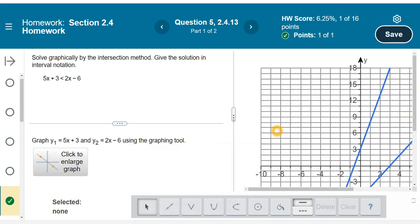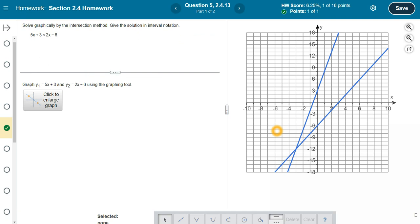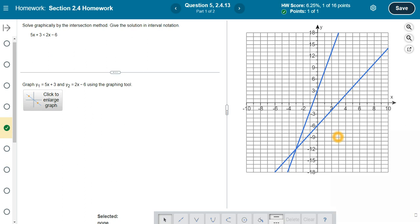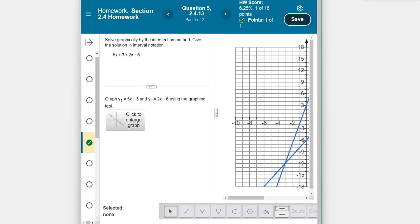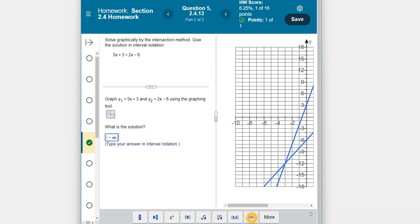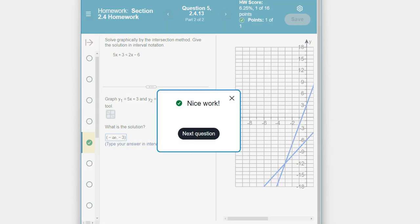Let me shrink it back down. You have to save the graph and then check answer first. And then it'll pop up and tell you to put in the solution. And then that's where I would put in parentheses, negative, here's your infinity symbol right there, comma, negative 3. There was no equal to, so use a parenthesis. And then check my answer again. Nice work. So that's that. I hope that helped.